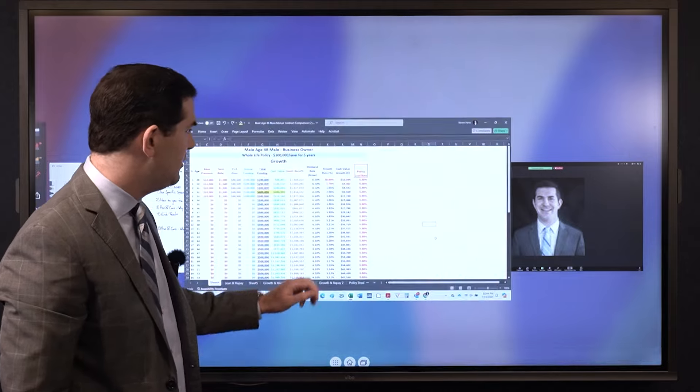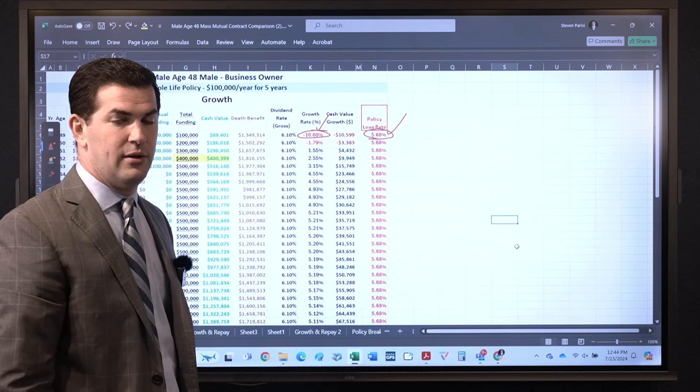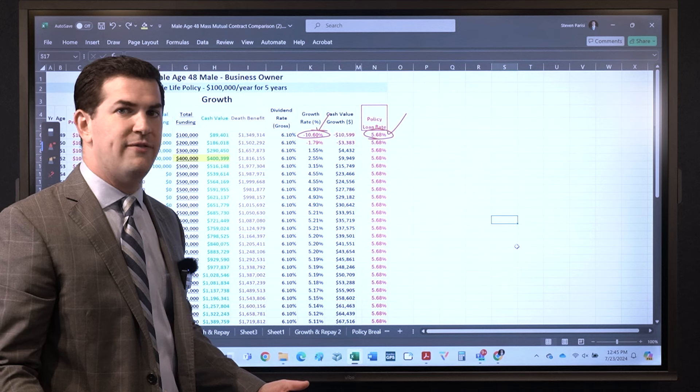So a big drawback to a lot of people is the upfront hit on cash value. That is a drawback even when we minimize expenses - it's there. Then also the cost to borrow, that loan interest is 5.68%. When we look at the policy, 5.68% cost to borrow, first year negative 10% hit. That means your cost: 10% plus the 5.68%. It's going to hurt us more upfront than it will benefit us upfront.